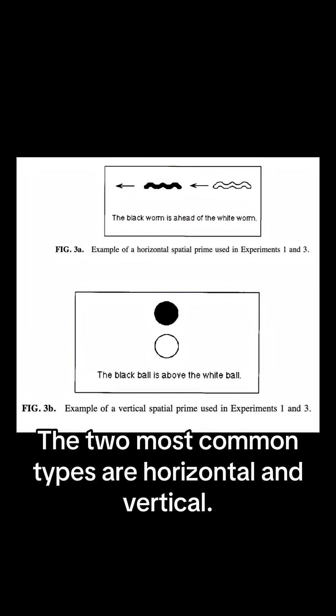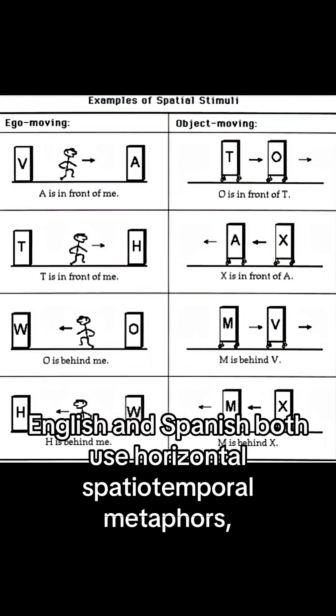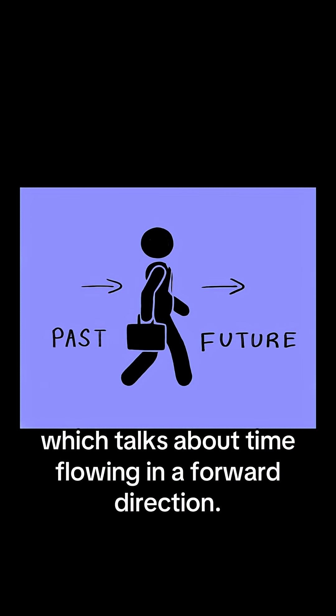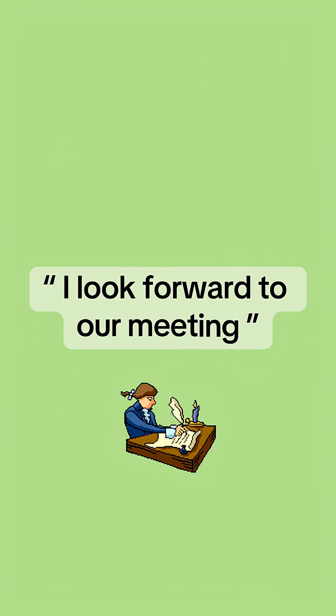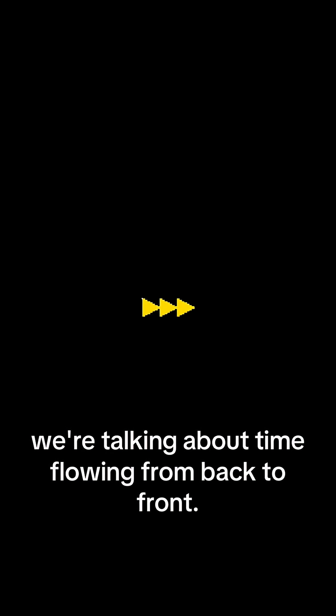The two most common types are horizontal and vertical. English and Spanish both use horizontal spatiotemporal metaphors, which talk about time flowing in a forward direction. In English, when we say 'I look forward to our meeting' or 'we can never go back in time,' we're talking about time flowing from back to front.